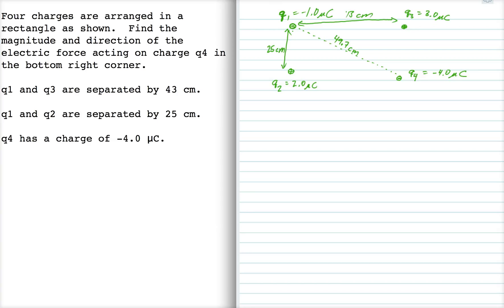And since Q1 is negative and Q4 is negative, that force is repulsive. Now this angle right here is inverse tangent of 25 over 43 centimeters, opposite over adjacent. This side is 25. So that's 30.2 degrees, and that means this force makes an angle of 30.2 degrees below the horizontal.